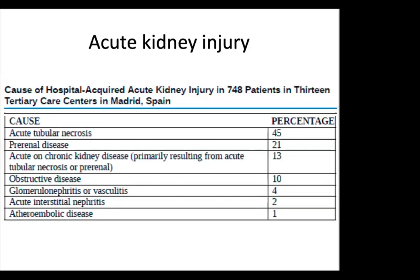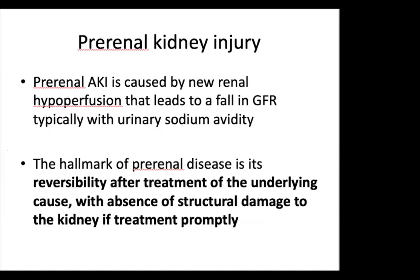AKI is classically divided into pre-renal, intrinsic, and post-renal (obstructive) causes. Prolonged pre-renal physiology may lead to intrinsic kidney ischemia. The greatest proportion of hospital-acquired AKI is secondary to acute tubular necrosis (intrinsic), accounting for 45%. Pre-renal kidney injury is caused by renal hypoperfusion leading to a fall in GFR, typically with urinary sodium avidity. The hallmark of pre-renal disease is reversibility after treating the underlying cause without structural damage if treated promptly. The kidney can maintain normal blood flow and GFR with systemic perfusion pressures as low as 55–60 mmHg under normal conditions.